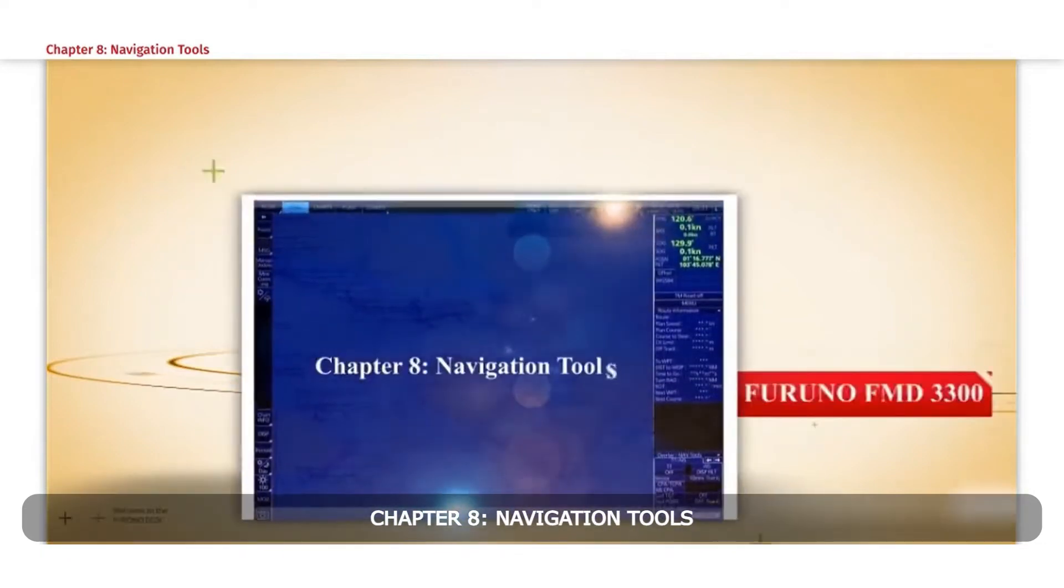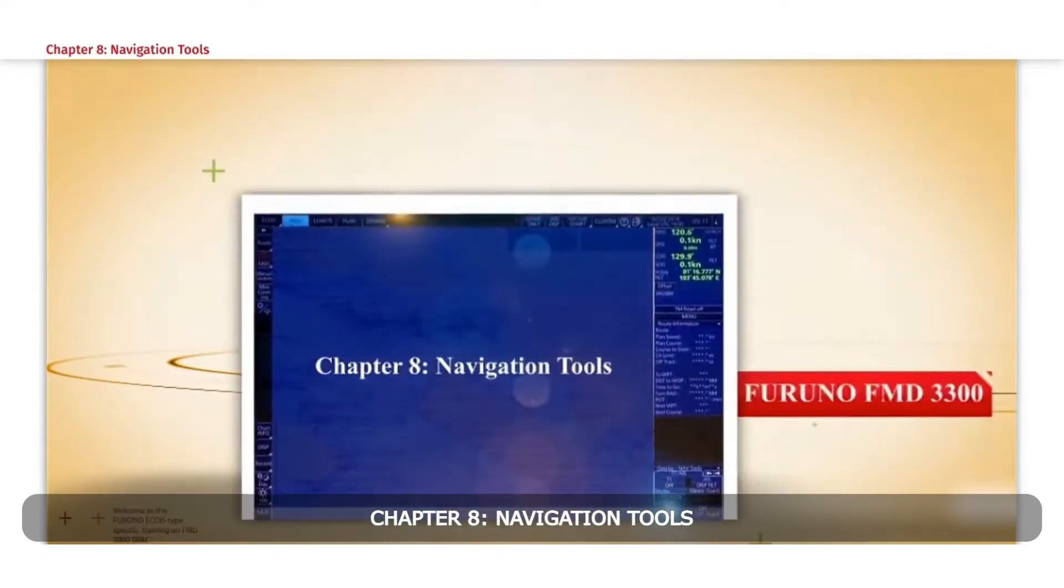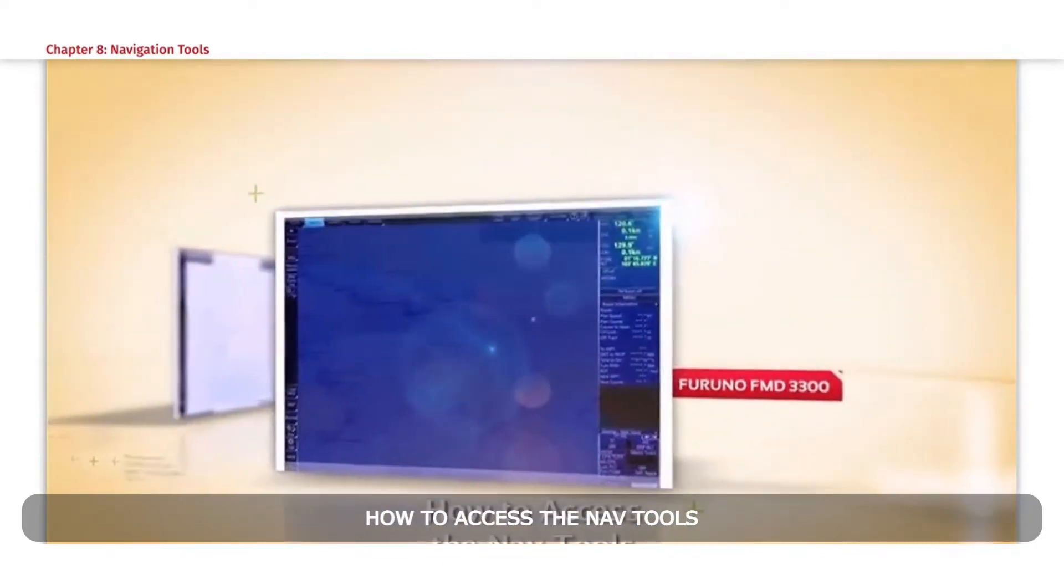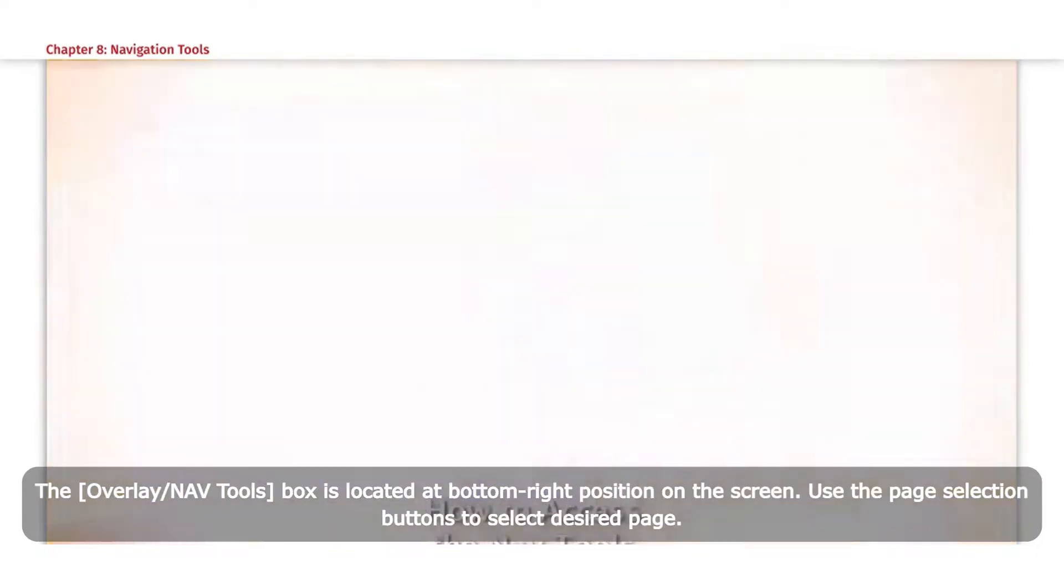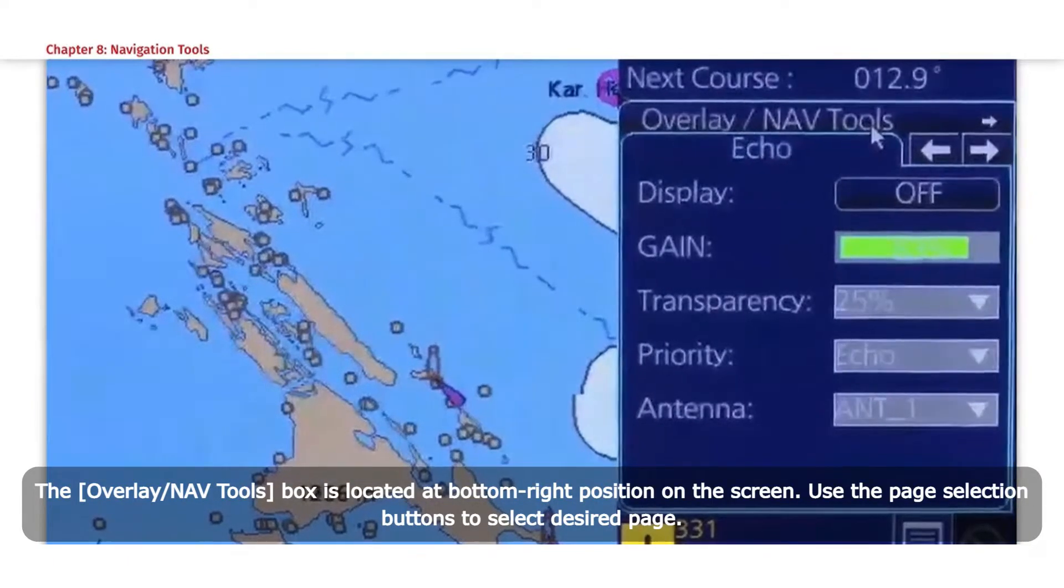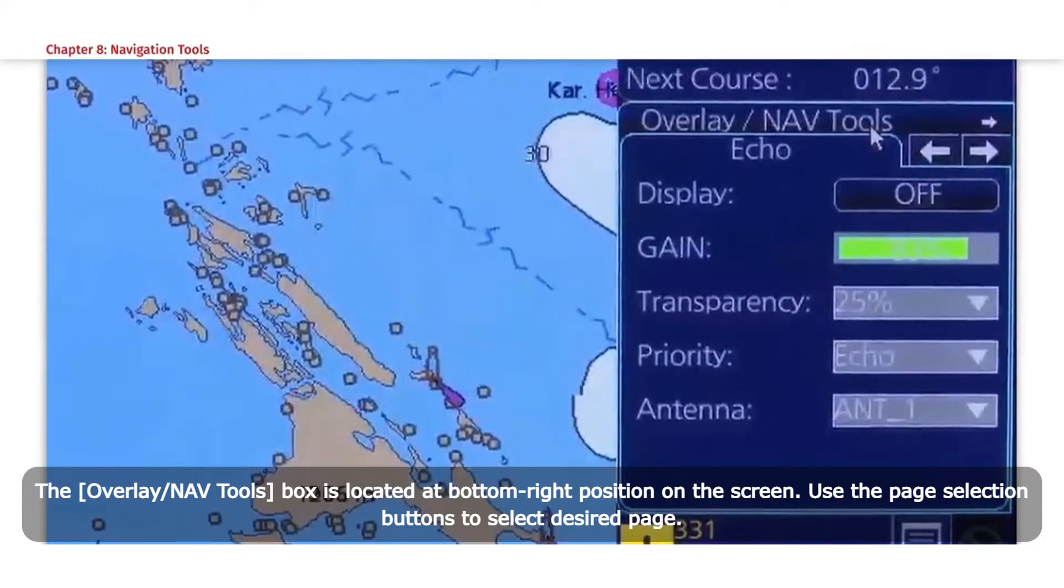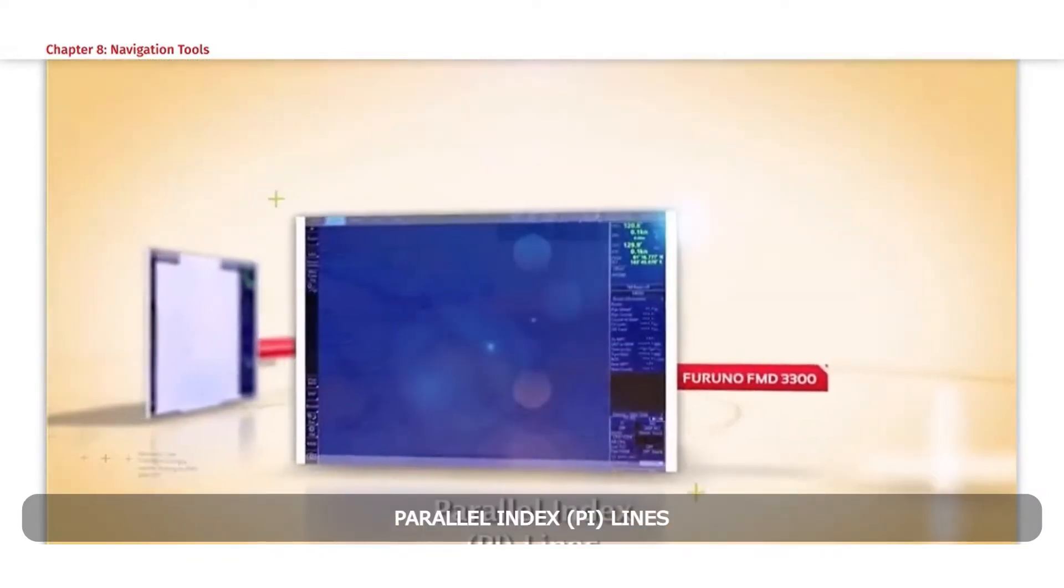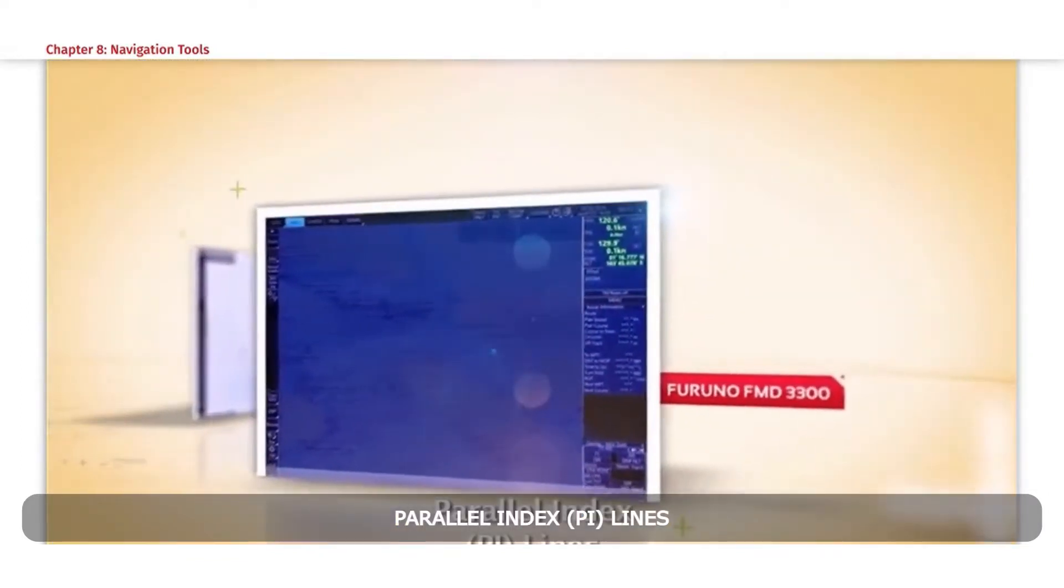Chapter 8: Navigational Tools. How to access the NAV Tools: The Overlay or NAV Tools box is located at the bottom right position on the screen. Use the page selection buttons to select the desired page. Parallel Index - PI Lines.